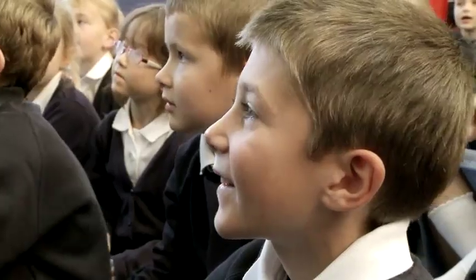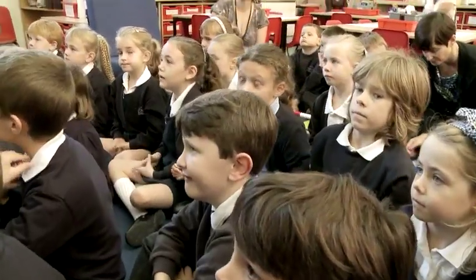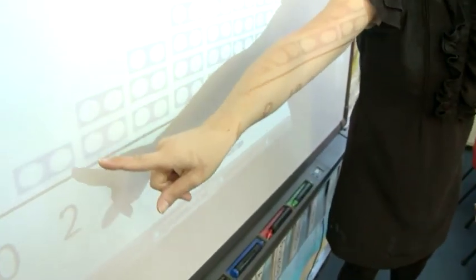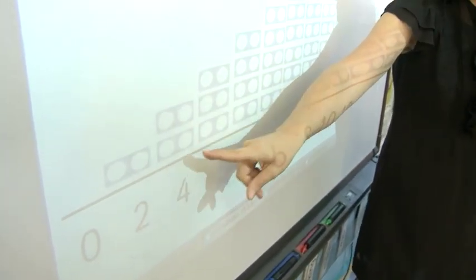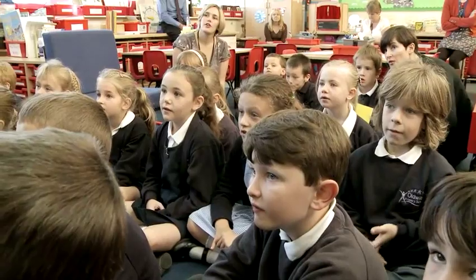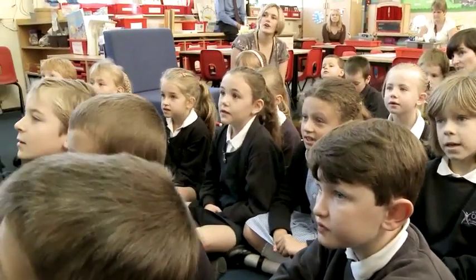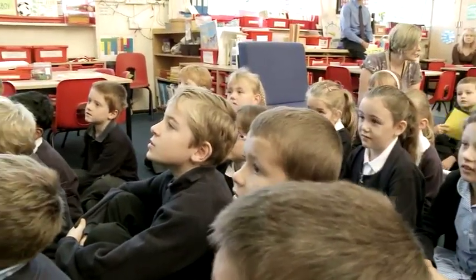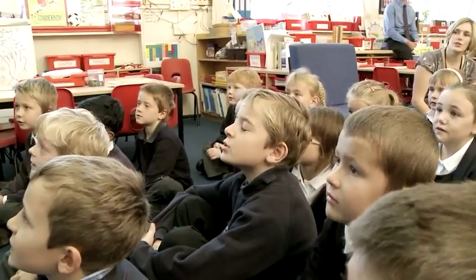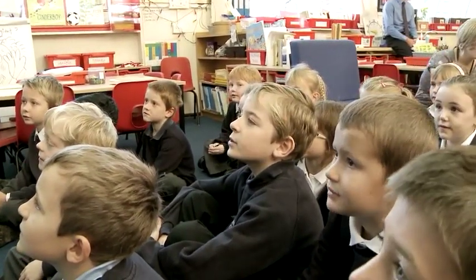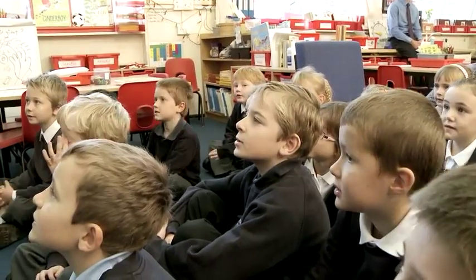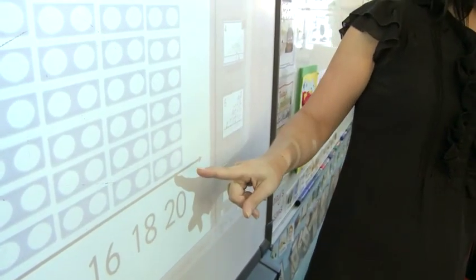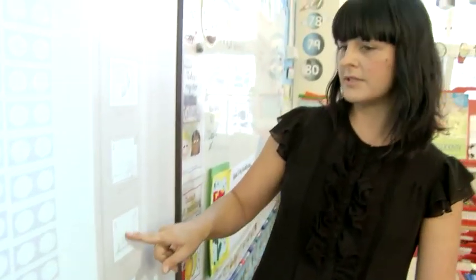Well done. Let's have a look at some of the pictures that we've been thinking about with our tables. One two is two. Two twos are four. Three twos are six. Four twos are eight. Five twos are ten. Six twos are twelve. Seven twos are fourteen. Eight twos are sixteen. Nine twos are eighteen. Ten twos are twenty. Well done.